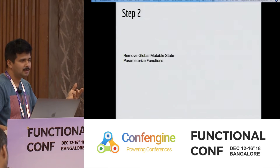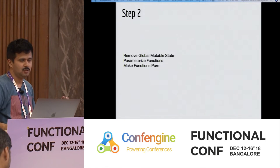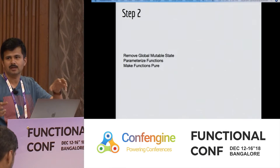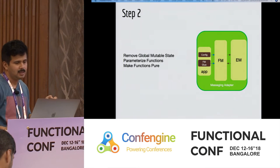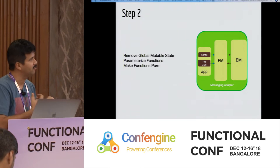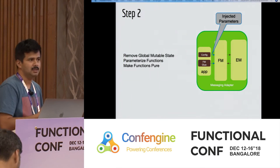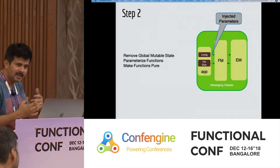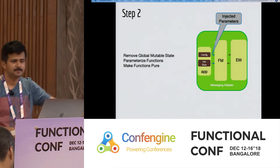What we did was take that global state out and add it as a parameter in the various functions that need it — parameterizing the functions. Another thing we did was, wherever possible, make some functions pure by moving side effects out. Not to the full scale, but for certain parts. This gave us a structure where some entity creates the config and the glue and passes them on to the actual module as injected parameters. The most important thing here is parameterizing the functions and removing global state.